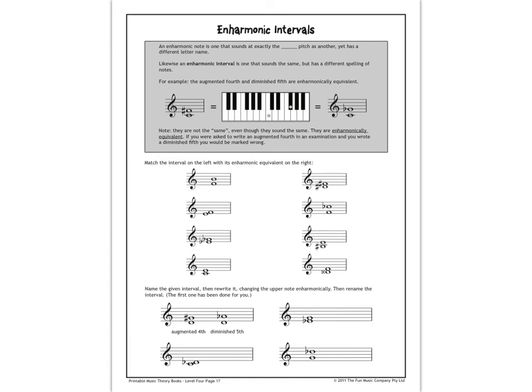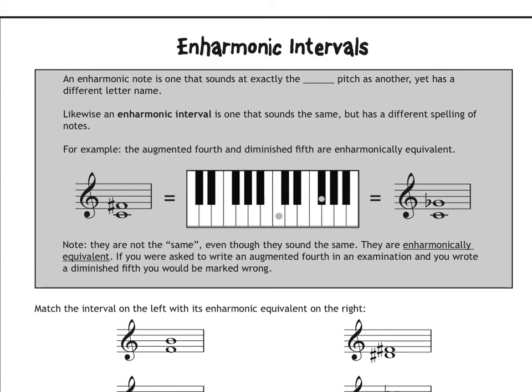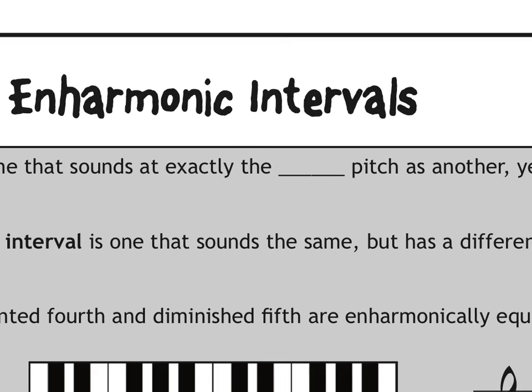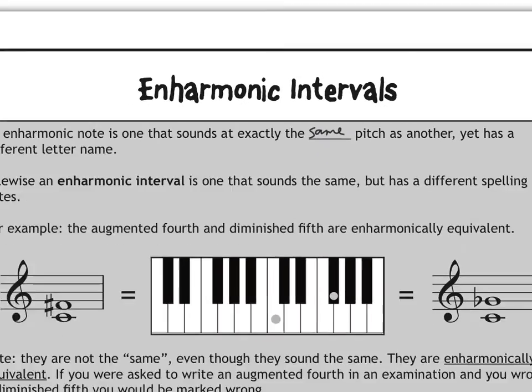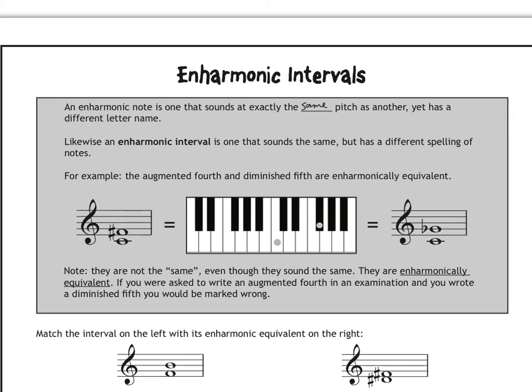All right. So this should be pretty straightforward. You know how to calculate intervals. You know what the word enharmonic means, because we've used it off and on for a few years now. Enharmonic just means the other name for. So the little gray box in here talks about the different names for the notes. An enharmonic note is one that sounds at exactly the same pitch as another. And then harmonic interval is one that sounds the same, but has a different spelling of the notes. The example they give us here is the augmented fourth of C to F sharp. How else can you write the note F sharp? Well, you can write it as a G flat.